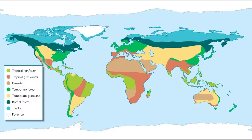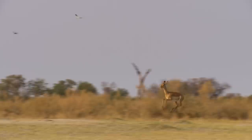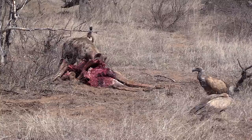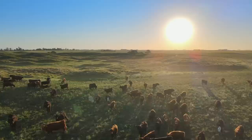Like tropical rainforests, tropical grasslands are close to the equator and remain hot all year round. But with less precipitation comes less dense vegetation and a lower diversity of animals. Well known tropical grasslands include the African savannah and the South American Pampas.